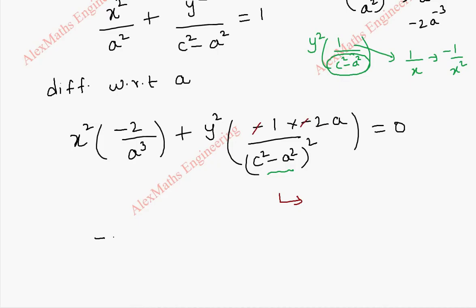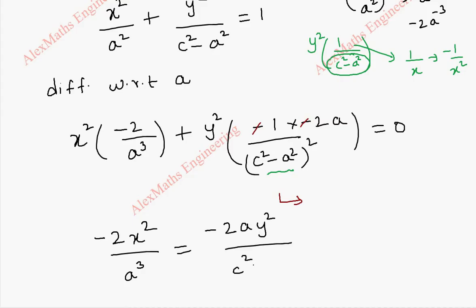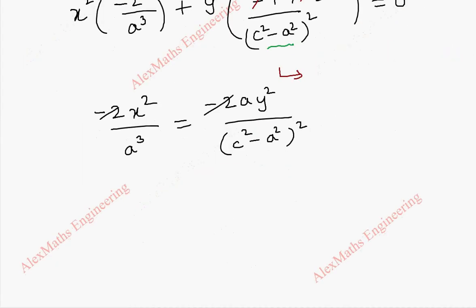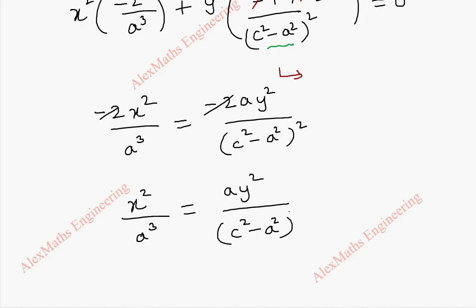Now the first term is −2x² / a³, and taking the second term to the other side gives +2ay² / (c² - a²)² = 0. We cancel −2 on both sides, leaving: x² / a³ = ay² / (c² - a²)².